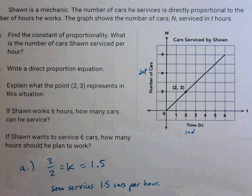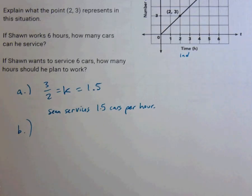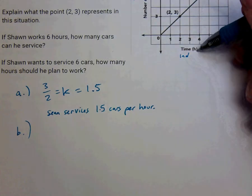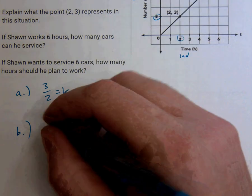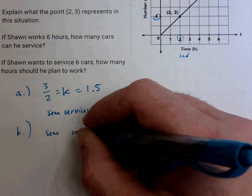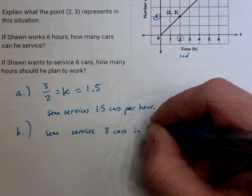B, explain what the point 2-3 represents. Okay, we kind of just talked about that. 2-3 means that in two hours he services three cars. So, Sean services three cars in two hours.